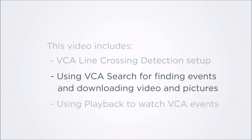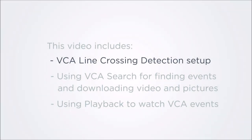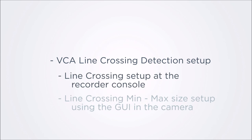Use the VCA search feature on the Alibi recorder console to quickly find and download video of line crossing events, and use playback to search for and watch line crossing events. To set up VCA line crossing detection, log into your Alibi recorder console with administrative privileges.